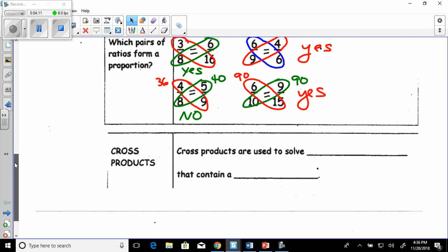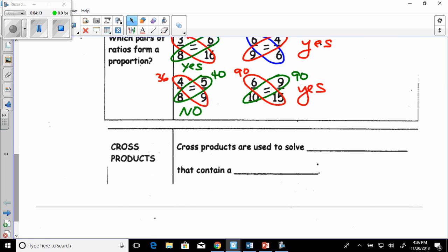Pretty easy, right? So let's look at your cross products. So we use our cross products like we just did to solve proportions that contain a variable.